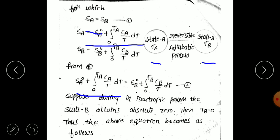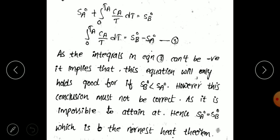We consider this as an isentropic process. For this isentropic process, state B attains absolute zero temperature — meaning T_B equals 0. Substituting T_B equals 0 in equation 2, the integral term for state B becomes 0. So we have only: S_A⁰ plus integral from 0 to T_A of C_A over T dT equals S_B⁰. Rearranging, the integral from 0 to T_A of C_A over T dT equals S_B⁰ minus S_A⁰. This is equation 3.